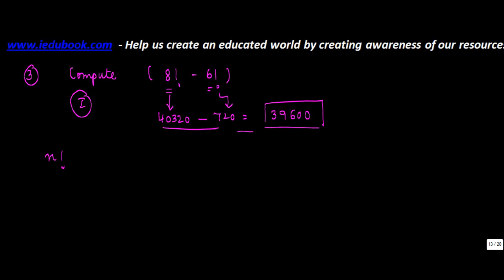n factorial is equal to n times factorial (n-1), or n times (n-1), and factorial (n-1) can be written as (n-1) applying the similar formula times factorial (n-2).